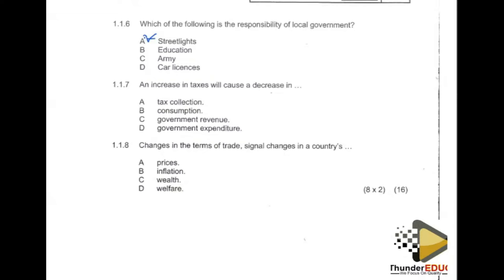In South Africa, they use progressive tax, which means the more you earn, the more tax you pay; the less you earn, the less you pay. The government applies taxation under fiscal policy to stimulate the flow of goods and services. Fiscal policy contains two instruments: taxation and government spending.